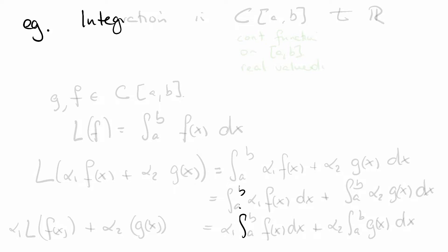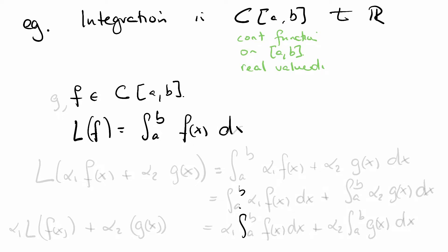Example: integration in C[a,b] to R. These are continuous real valued functions on the interval a to b. So say we take an f that is a continuous real valued function on this interval. We can define L of f to be the integral from a to b of f of x dx.